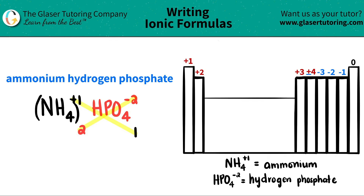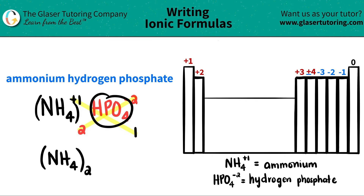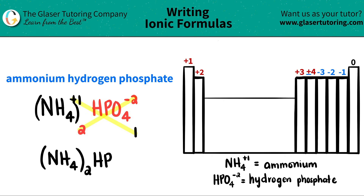So for the first polyatomic, the ammonium, I need to put parentheses — (NH4) — close the parentheses, and now I say I have two of them. For the other polyatomic, the hydrogen phosphate, I only have one, so I don't have to use parentheses. In this case, I just write HPO4.